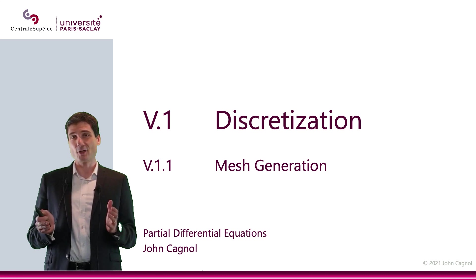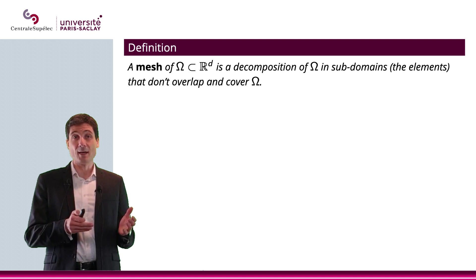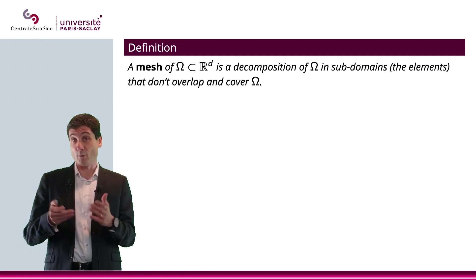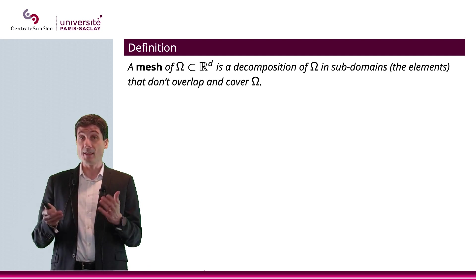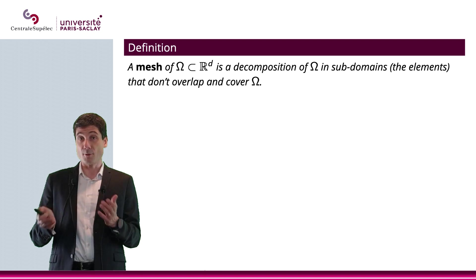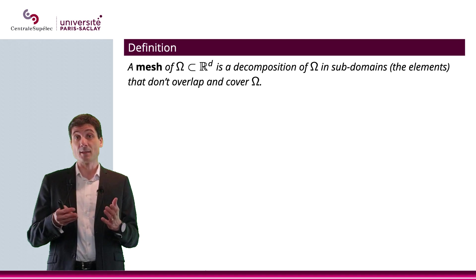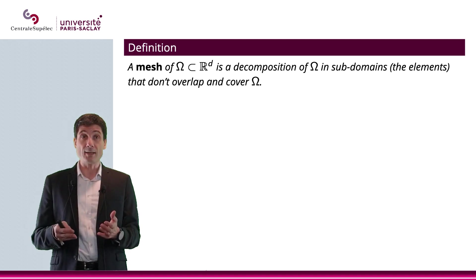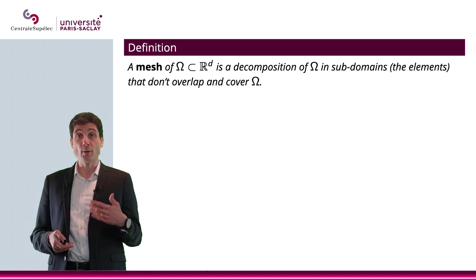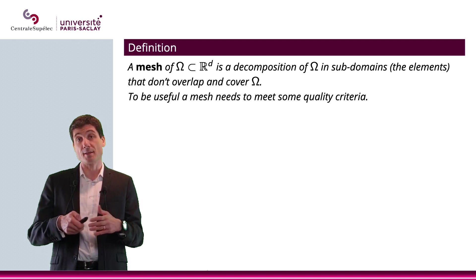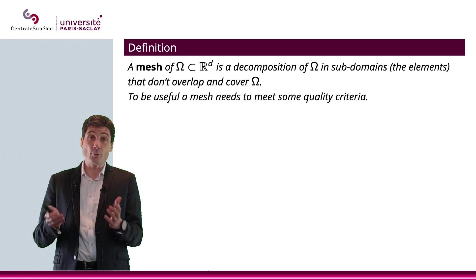In this video we're going to mesh a domain. Let Ω be included in ℝᵈ — that will be our domain. A mesh of Ω will be a decomposition of Ω into subdomains, and this decomposition must meet two properties: the elements do not overlap, and they cover Ω. Often we also have to impose additional quality criteria on the mesh and some regularity on Ω itself.